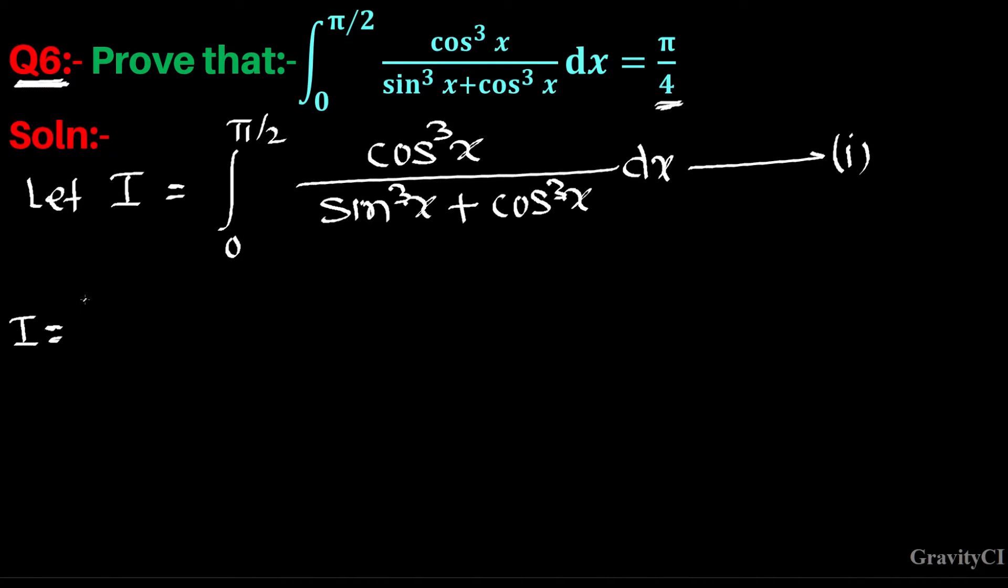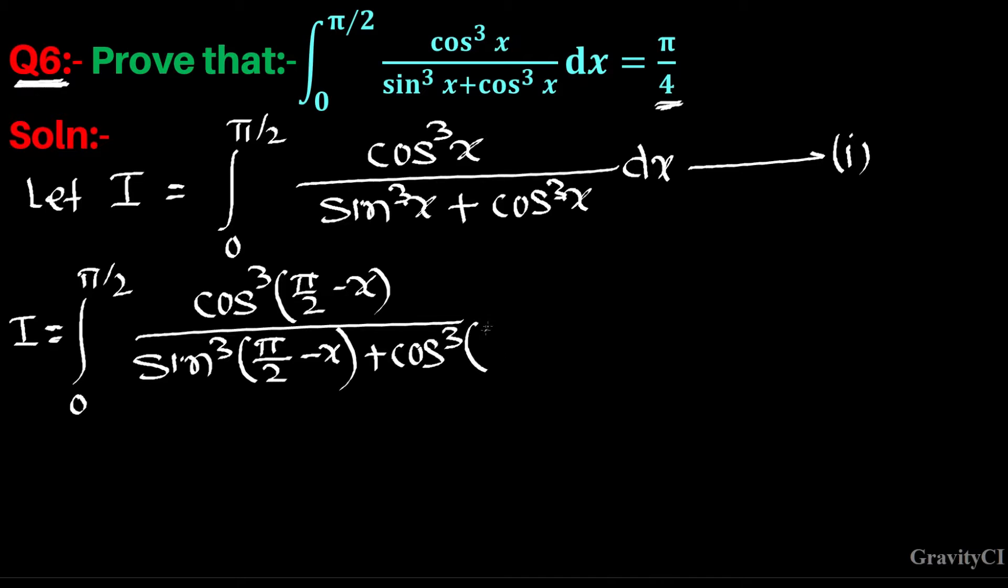So equal to 0 to π/2, cos³(π/2 - x) upon sin³(π/2 - x) plus cos³(π/2 - x).